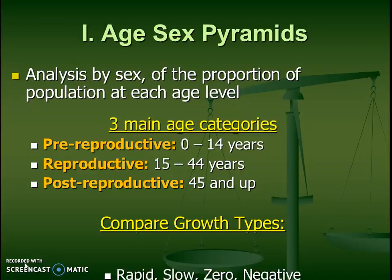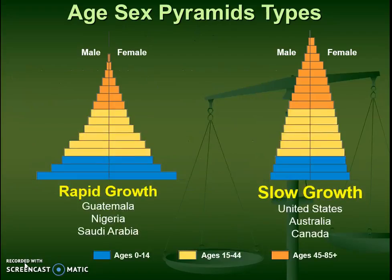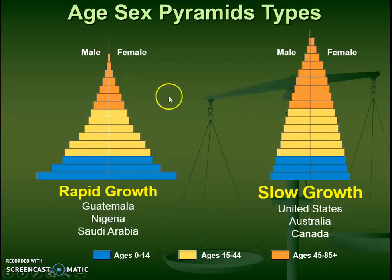This will help us really look at growth types. We can see really rapid growth, slow growth, zero growth, or negative growth. Here are some examples of those age-sex pyramids. We're always going to have on one side men and on one side women, and we're always going to have the lower age categories at the bottom. The middle is always going to be that reproductive age group, and at the top, we're going to have those that can't have babies anymore because they are older. So we have different nations in those different categories.